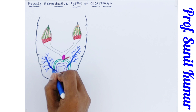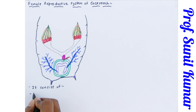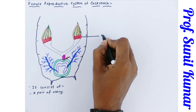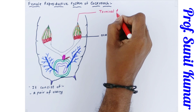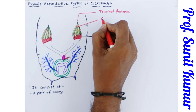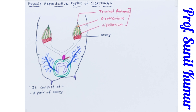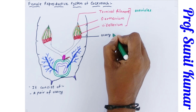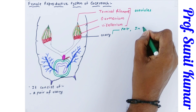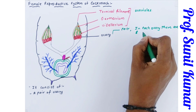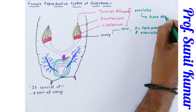The female reproductive system consists of a pair of ovaries. Each ovary is made up of ovarioles. The tip of each ovariole is called the terminal filament; the middle portion is called the germarium; and the lower portion is called the vitellarium. These three together form the ovariole. In each ovary there are eight ovarioles present, and there is a pair of ovaries. The role of the ovariole is production of eggs or ova.